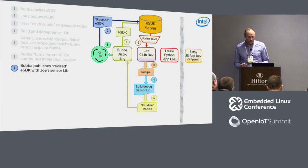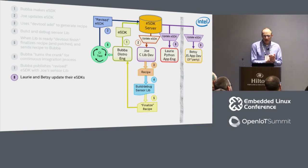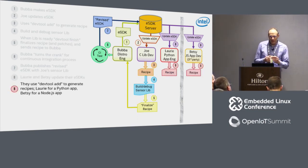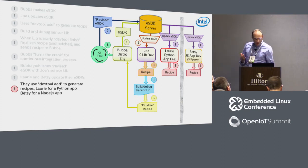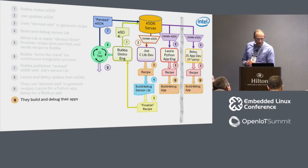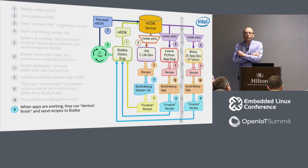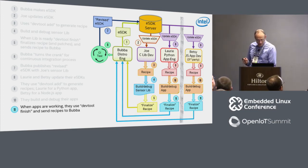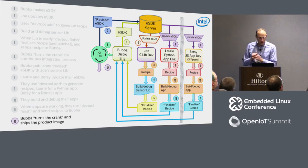Laurie and Betsy can now update their eSDKs, giving them access to Joe's library. They use devtool add to generate their recipes and build their apps, which are now using Joe's library. They go through the build and debug cycle, and when the apps are done, they do their own devtool finish, work with Bubba, send it up to him, and he turns the crank and ships the product image.